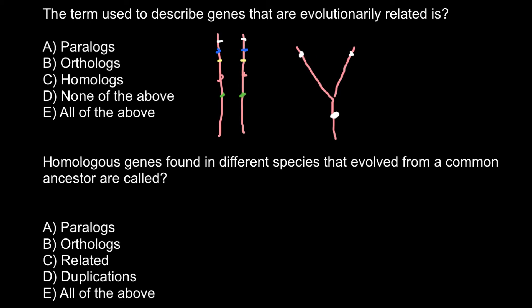We still expect that these two genes would specify the same product, so biologically we can say that they would perform the same functions in both the domesticated cat and the lion. So now let's talk about paralogs. Once again we have an evolutionary tree here.